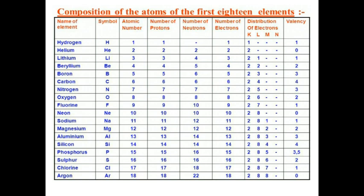One example is chlorine. Chlorine has the symbol Cl and atomic number 17. The number of protons is 17 and the number of electrons is also 17. The K shell accommodates 2 electrons, the L shell accommodates 8 electrons, and the remaining 7 electrons move to the third energy level, that is the M shell. So chlorine's electronic configuration is 2, 8, 7.